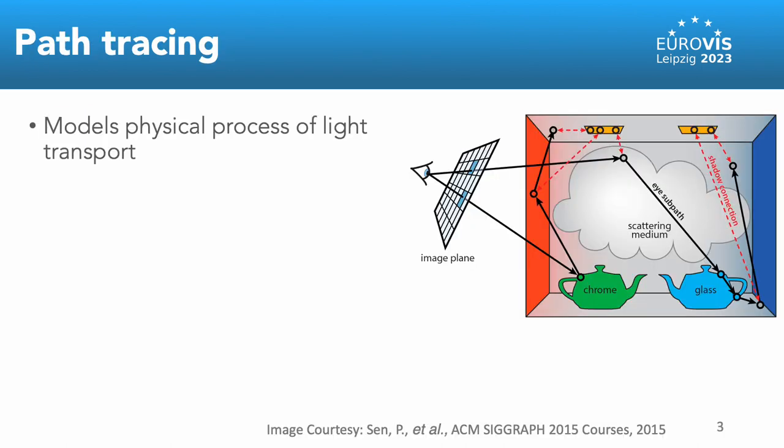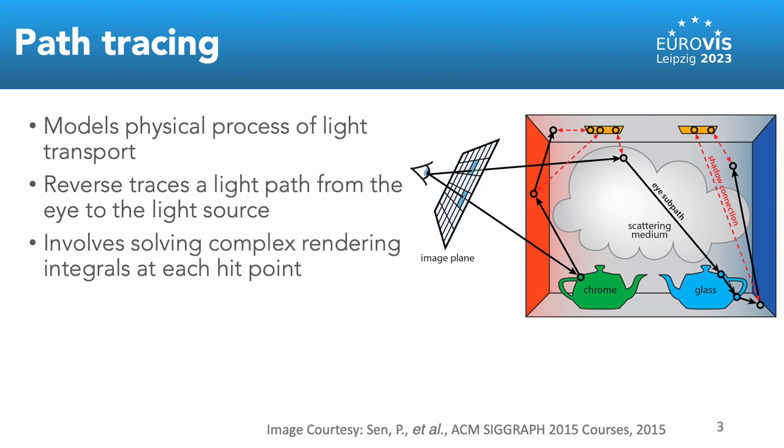Path tracing methods model the physical process of complex light transport in a scene. In path tracing, the system first traces a ray from the camera to find the visible surface and from the visible surface to the light source. This involves solving complex rendering integrals at each hit point.